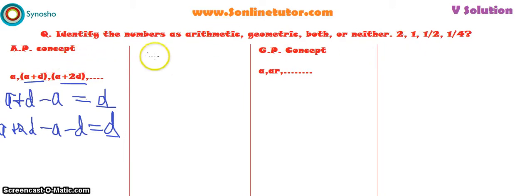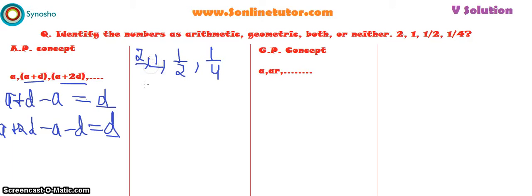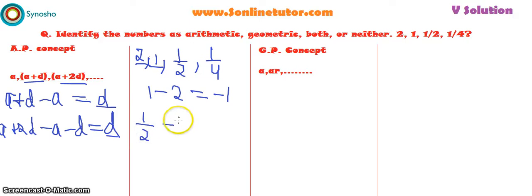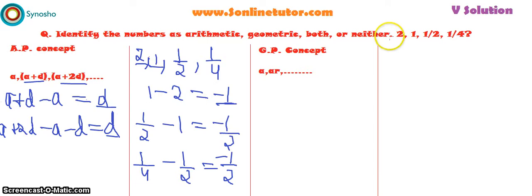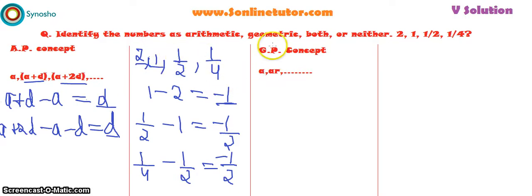To find out if the series 2, 1, 1/2, 1/4 is arithmetic, we check the differences. 1 minus 2 gives minus 1. Then 1/2 minus 1 gives minus 1/2. And 1/4 minus 1/2 gives minus 1/2. The difference between the first two terms is minus 1, but the next differences are minus 1/2, so the whole sequence is not in arithmetic progression.